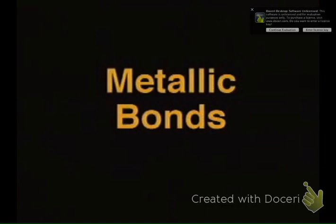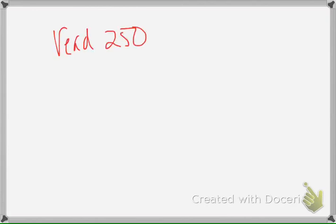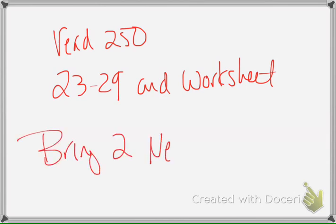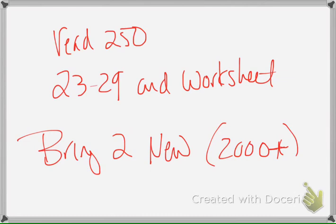For homework: on page 3, read page 250, and do problems 23 through 29 opposite your lecture. Also complete the worksheet on naming formulas, covalent substances, and naming acids. I also asked you to bring two new pennies — something from the year 2000 or later works best. If you want to take your pennies home after we change them, make sure you bring two because it's kind of interesting. That's about it, hope this helped you out.